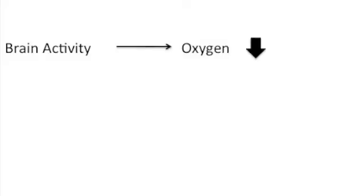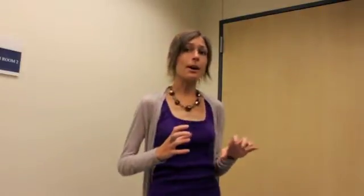In functional MRI, what you're actually measuring is the hemodynamic response. This is a combination of blood flow into active brain areas and the amount of oxygen that's in that blood. When you use a certain part of your brain, it needs more oxygen. Initially, the level of oxygen in that area decreases because it's using up that oxygen, but then increased blood flow to that area compensates and the amount of oxygen increases.